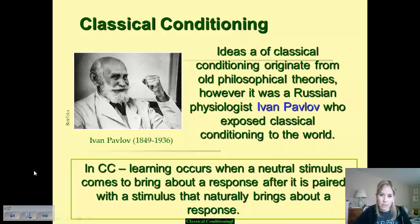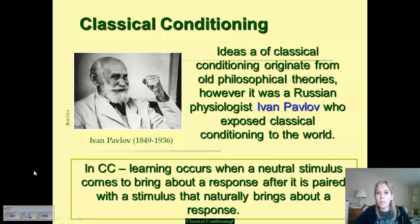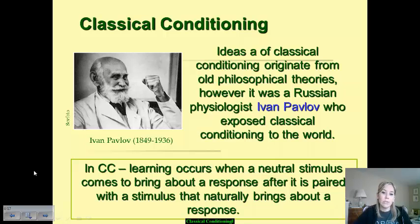Classical conditioning is going to be the emphasis of our discussion today. It is one of many types of learning and associations we can develop across our lifetimes. Classical conditioning was actually a complete and total accident. The man who discovered it is named Ivan Pavlov, a Russian physiologist. He was studying digestive processes in dogs, and the only reason he stumbled on classical conditioning as a psychological aspect was because his research was not going the way he intended. In classical conditioning, learning happens when a neutral stimulus comes to bring about a response after being paired with a stimulus that naturally brings about a response.